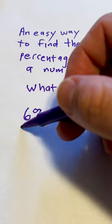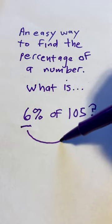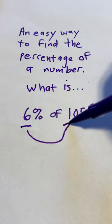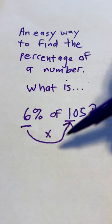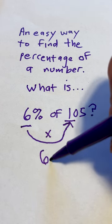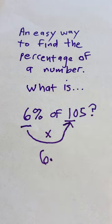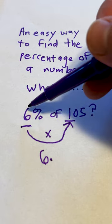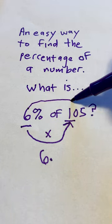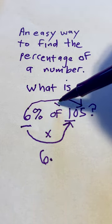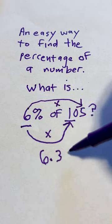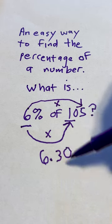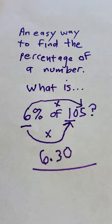We will take the 6 and multiply it by the first number, 1. So 6 times 1 equals 6. Then I'll add a point. Now we will take the 6 and multiply it by the number 5. So 6 times 5 is 30. So we get 6.30, or 6.3.